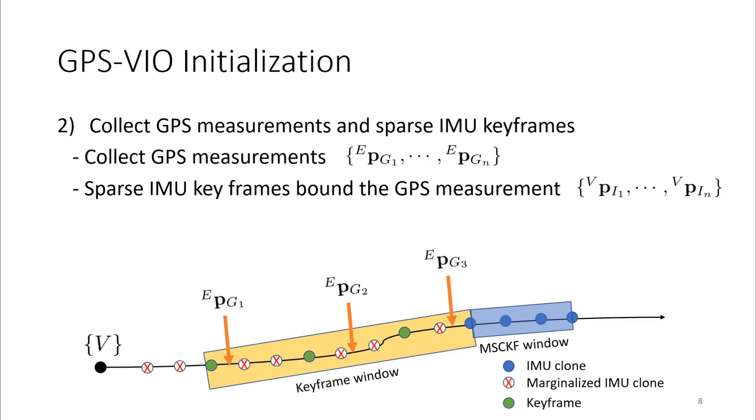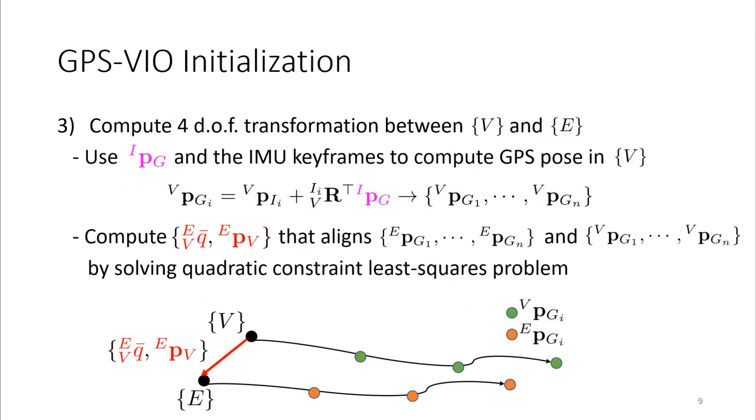While the VIO is running, it starts to collect GPS measurements and sparse IMU keyframes that can bound GPS measurements. We keep the keyframes sparse because the computation cost increases as more keyframes we have in our state.